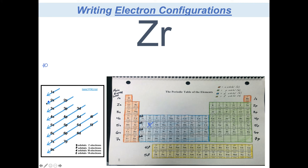It's important to remember: S can hold 2 electrons, P can hold 6, D can hold 10, and F can hold 14. If you know there are 40 electrons, you just fill in and go until you use up all 40. In this example, I'll do both approaches at once. We always start with 1s, and with 40 electrons to fill, we put 2 in: 1s2. S can only ever hold 2, which takes me down to 38 electrons remaining. Then we move to 2s, which also holds 2, leaving 36.